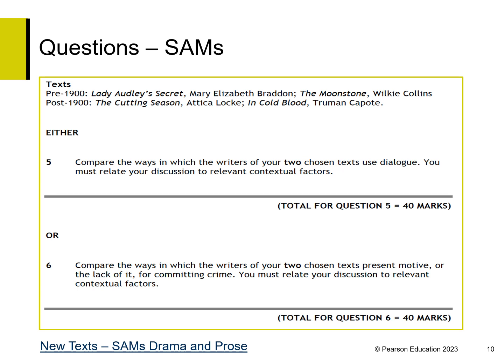There are two sets of questions available on the website. These are the questions from the SAMs, or Sample Assessment Materials. As you can see, there is a choice of question. The first question starts with the phrase 'compare the ways in which the writers of your two chosen texts use,' which encourages students to focus on AO1, AO2 and AO4.